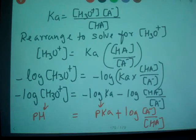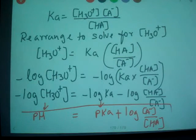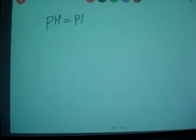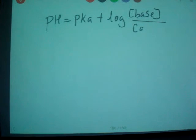That's Henderson-Hasselbalch equation. A minus concentration, HA concentration. This equation generally when we write is pH equals pKa plus log base concentration divided by acid concentration.